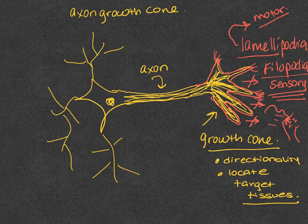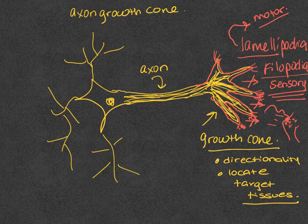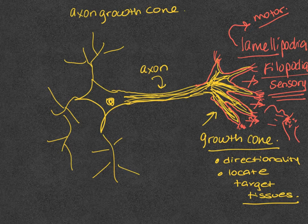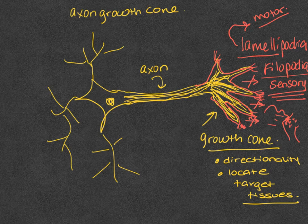So what these microspikes do is that they attach to the substrate and they exert a force that pulls the rest of the cell forward. So kind of like sticky fingers and then you just pull it towards you.